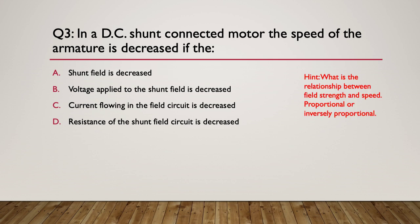What is the relationship between field strength and speed — is it proportional or inversely proportional? In a DC shunt connected motor, the speed of the armature is decreased if the resistance of the shunt field circuit is decreased. So if you decrease the resistance for the shunt field, you will decrease the speed.